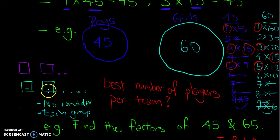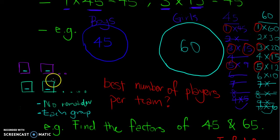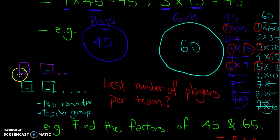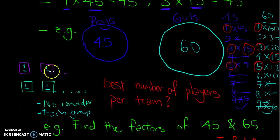The number of boys in each group is the same with no remainder, and the number of girls in each group is the same with no remainder. We can use common factors for this. If I choose a factor of 1 — one person in each group — I can form 45 groups of boys with no remainder.